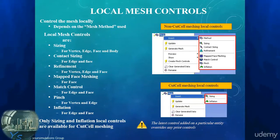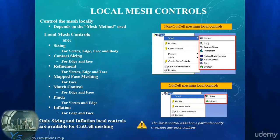All local controls override the global controls. The order in the tree is not important as long as the definitions do not overlap. In case of such an overlap, the item that is lower in the tree is dominant over everything that has been defined previously for the selected geometry feature.